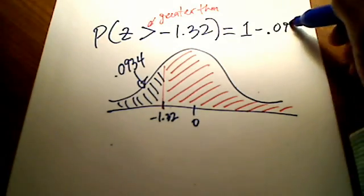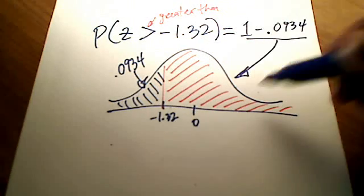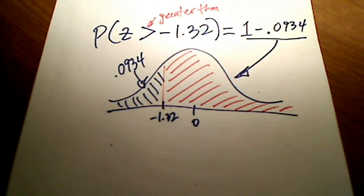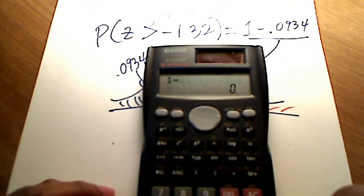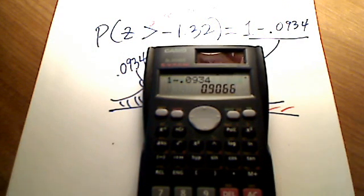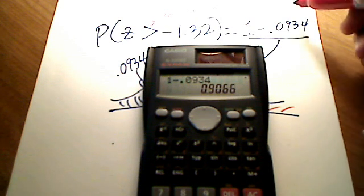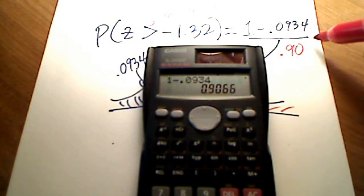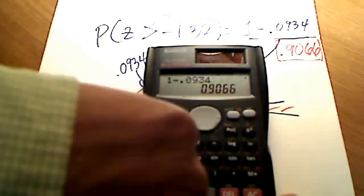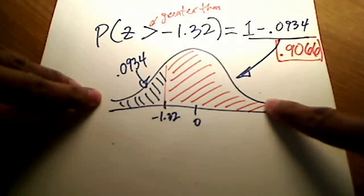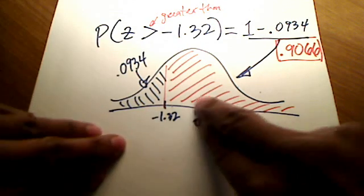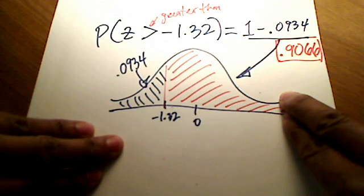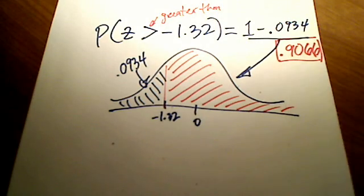I can't just use the table as-is because that gives shading to the left. I need all the area to the right of negative 1.32. From the previous example, the area to the left was 0.0934. Because the total area is 1, this area to the right must be its complement: 1 minus 0.0934. Punching that into my calculator gives 0.9066. That's roughly 90 to 91% of the total data — which makes sense since only a small sliver on the far left is 0.0934.